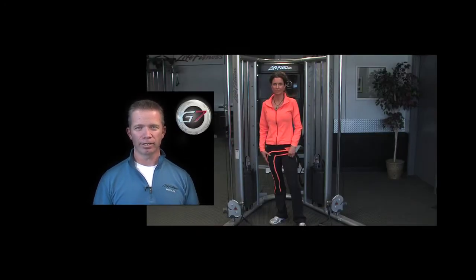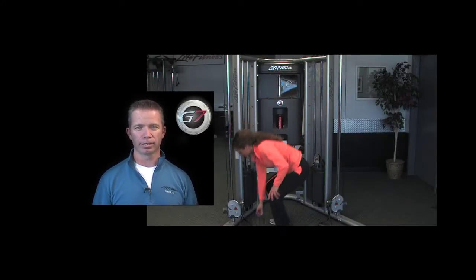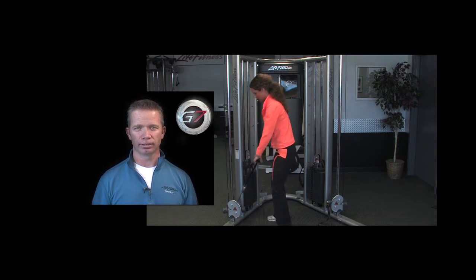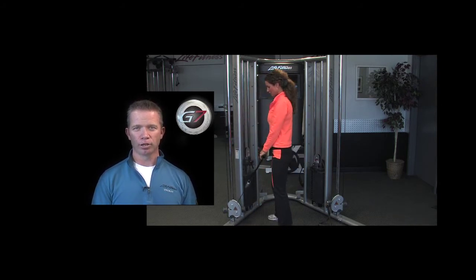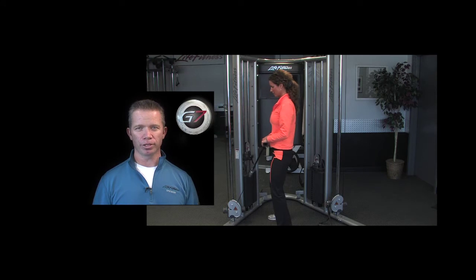Alright, the next exercise we're going to try, Maureen, is called the upright row. Go ahead and grab one handle with both hands, standing right in front of the pulley. Starting at the waist, pulling the pulley up to just below your chin, driving those elbows up.